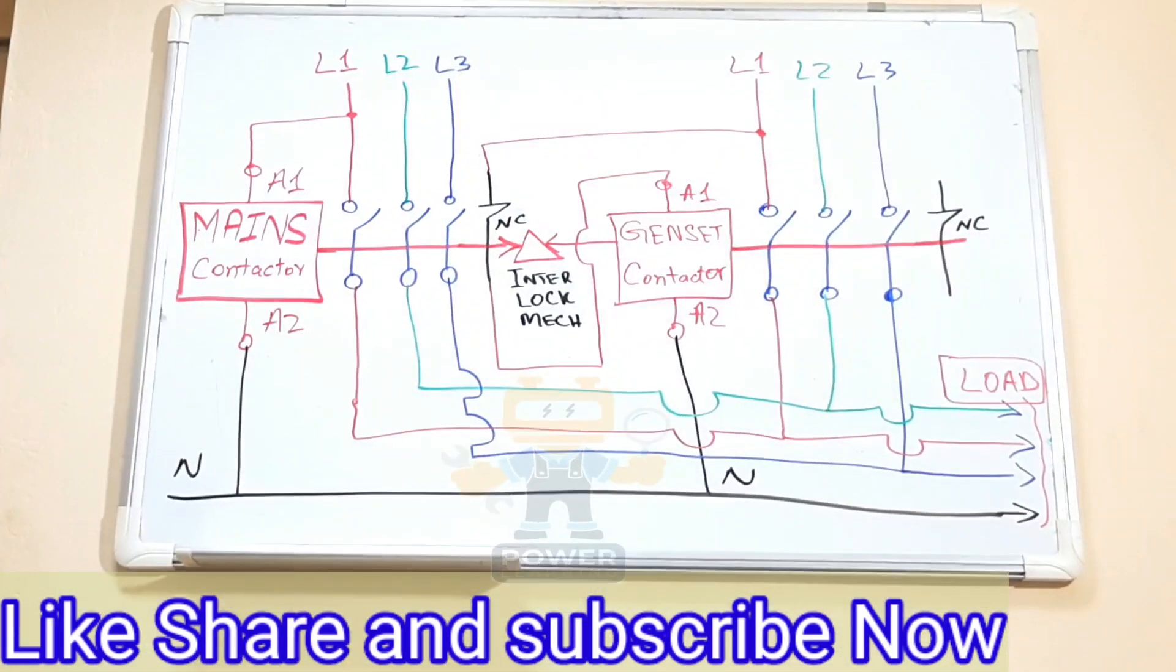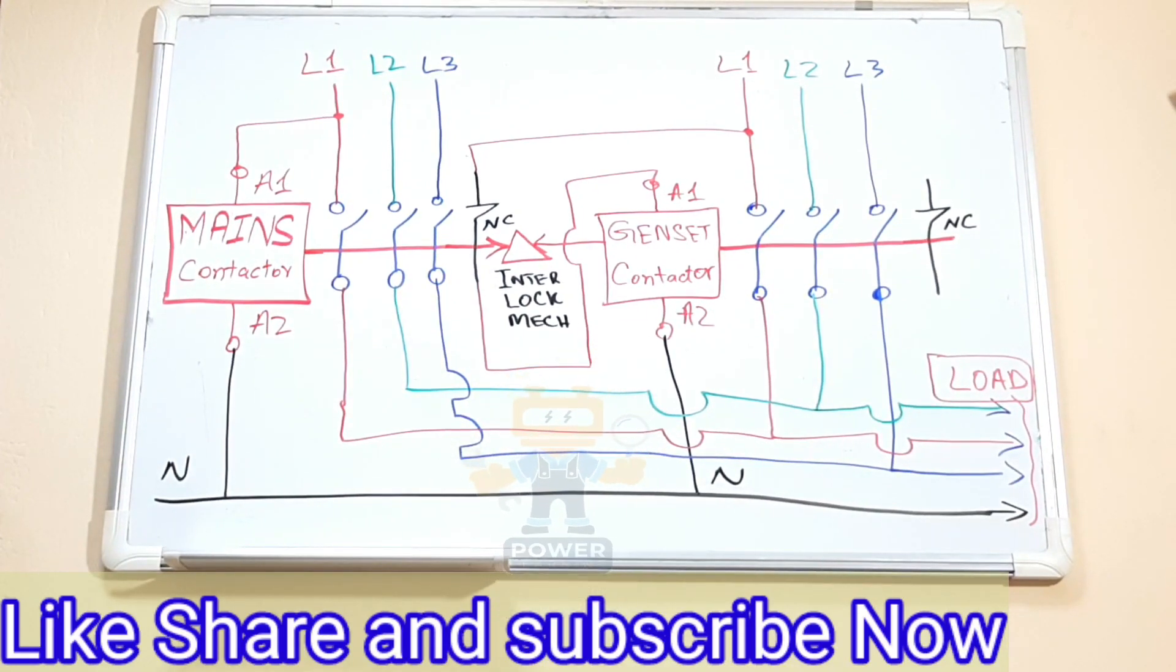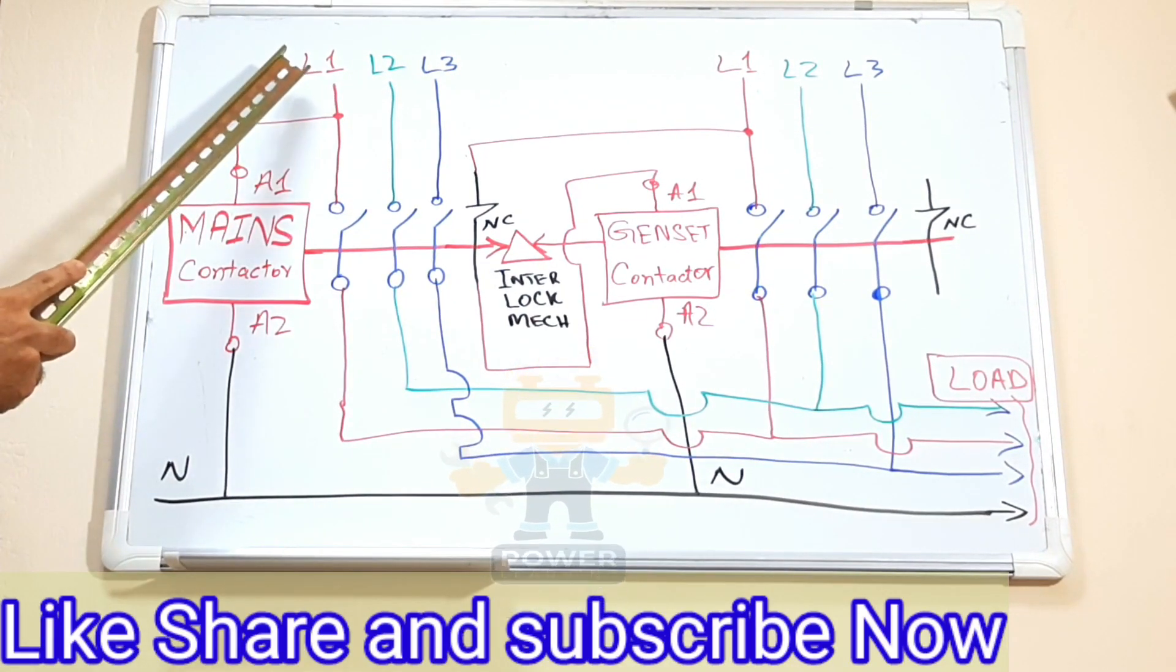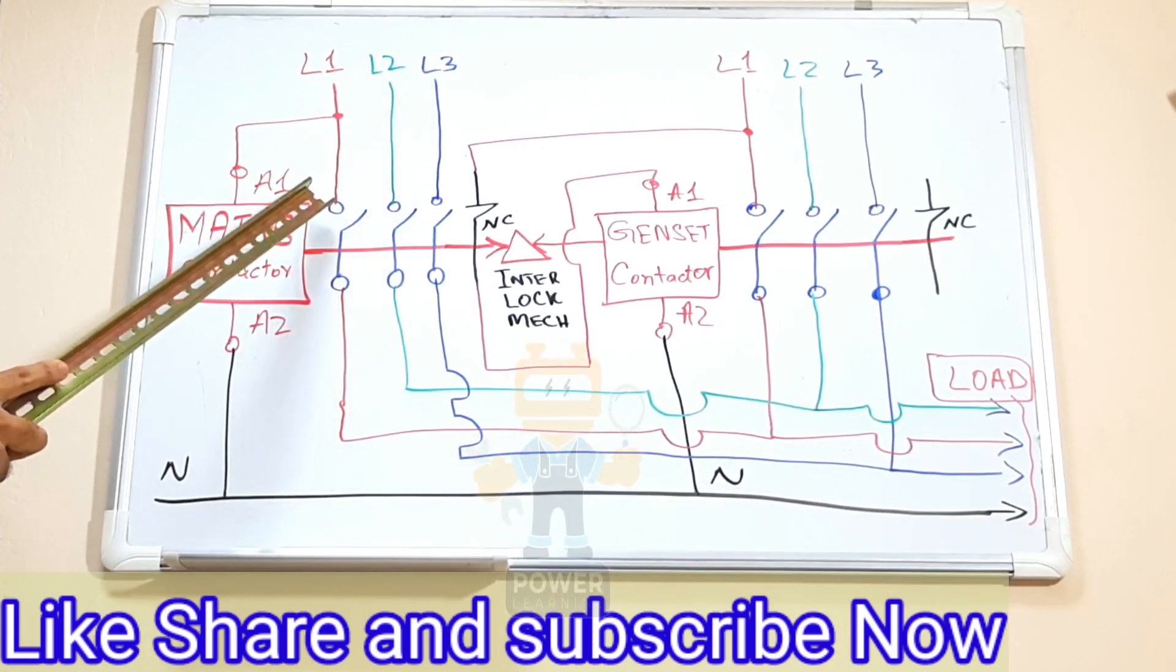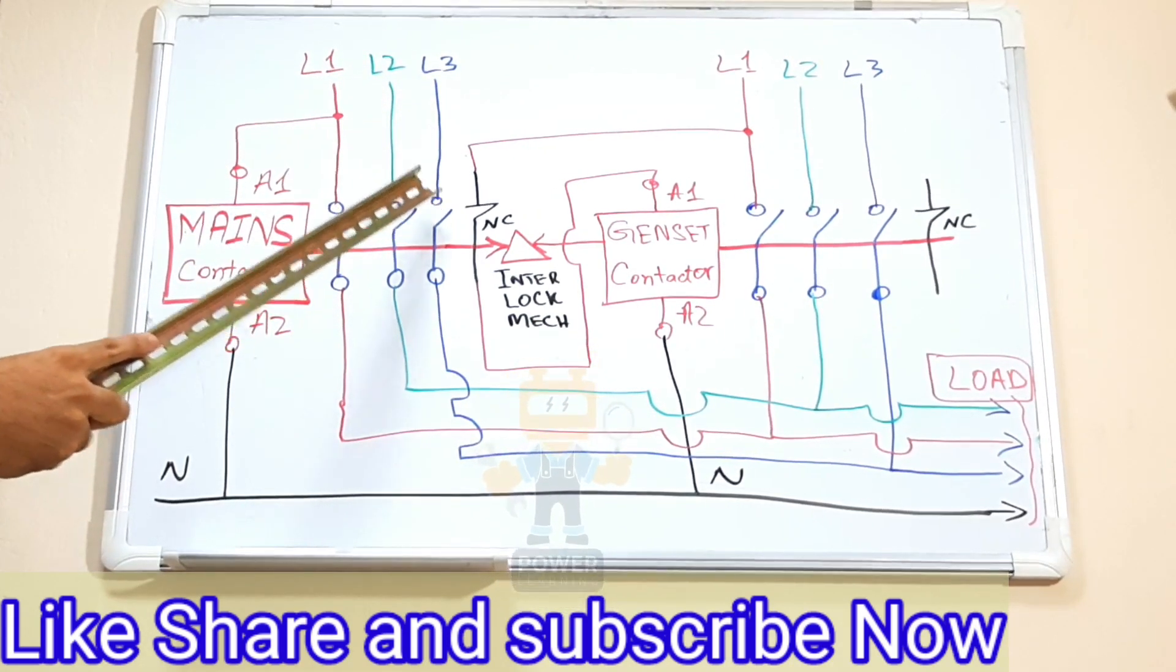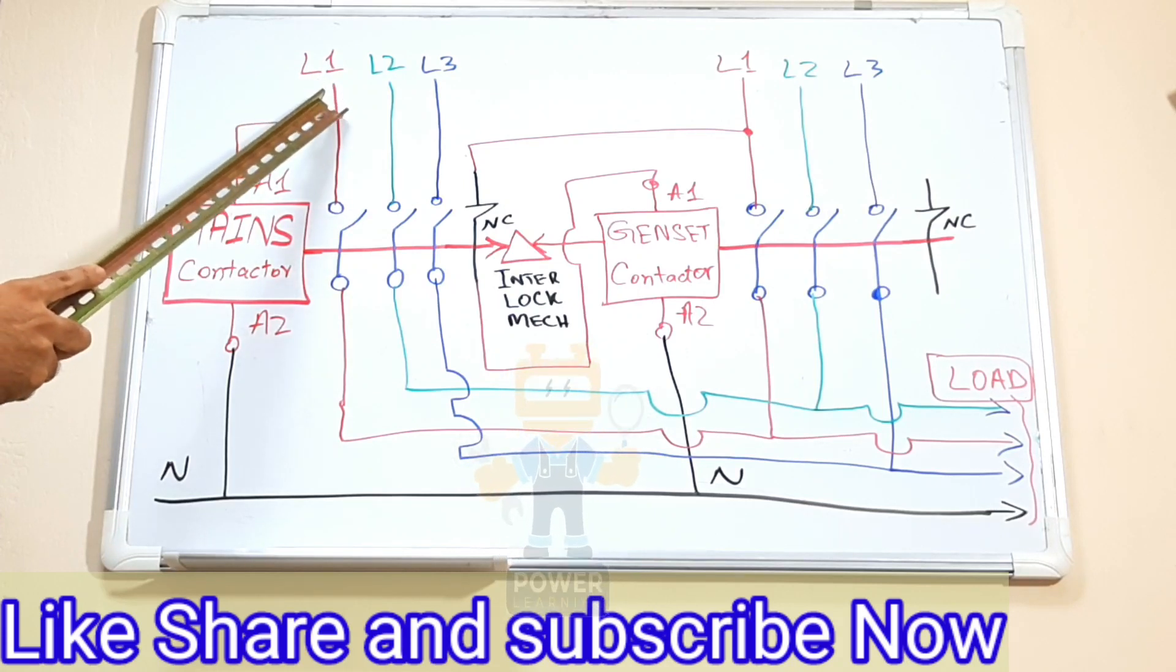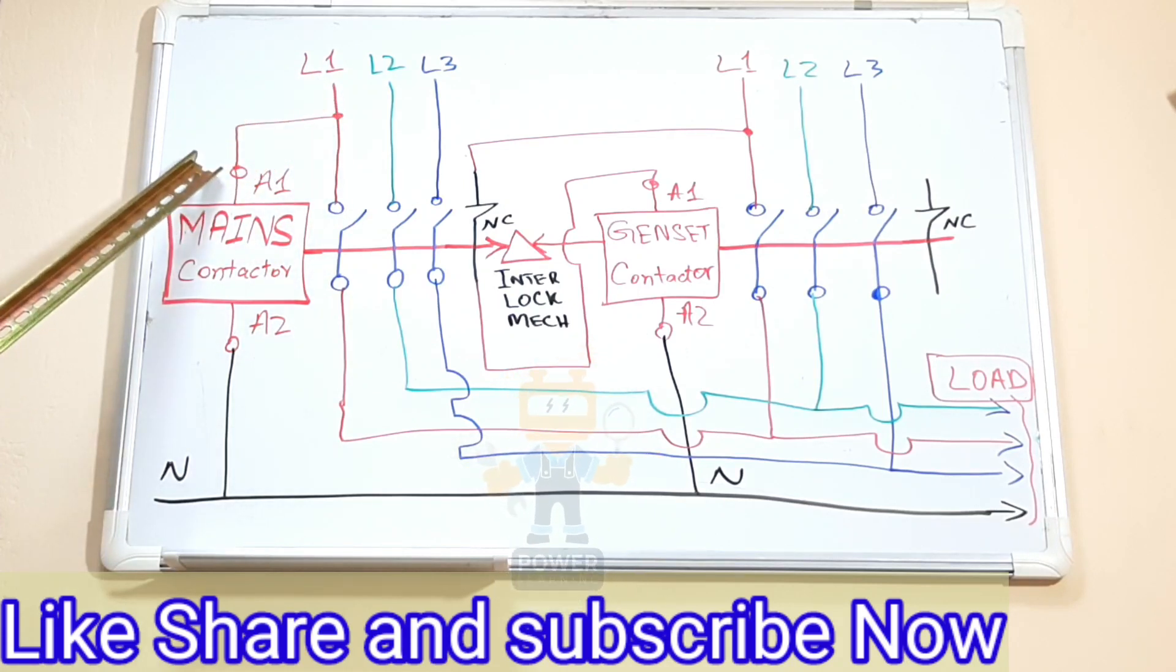So guys, look at here. This is our mains power: line one, line two, line three. These three are connected here on the mains contact. After that I took one wire from L1 and connect here to A1.